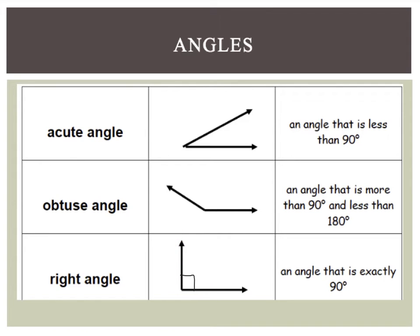And my neat trick for you was that if you hold up your finger like an L, you hold it up to the angle. If the angle matches with your finger, then it is a right angle. If it is more than your fingers, then it is an obtuse angle. And if it's less than your fingers, it's an acute angle.